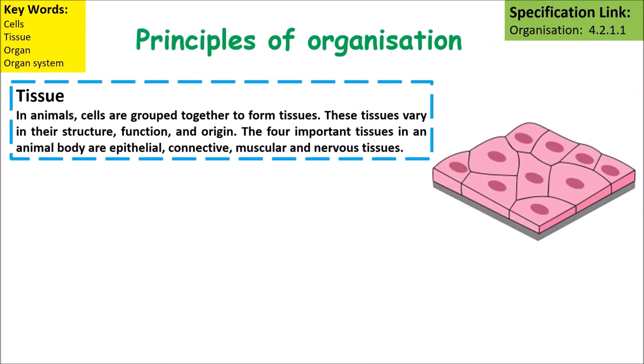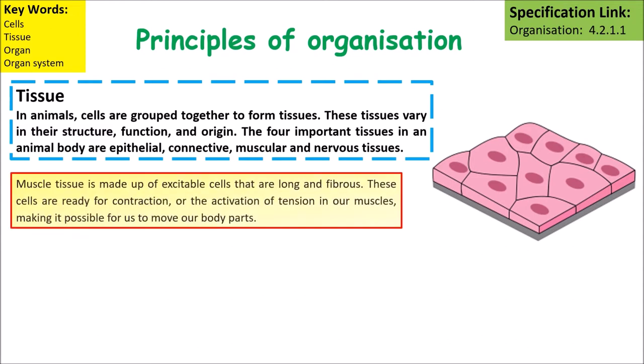In animals, a tissue is a group of similar cells grouped together to carry out a particular function. Muscular tissue is made up of cells that are long and fibrous — these cells are adapted for contraction or the activation of tension in our muscles, making it possible for our body to move.